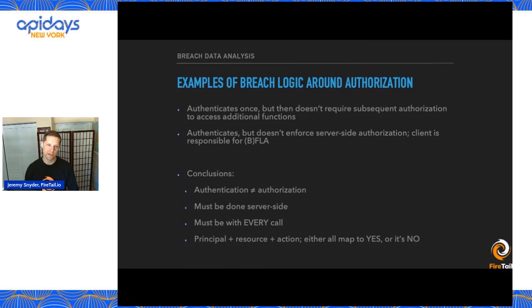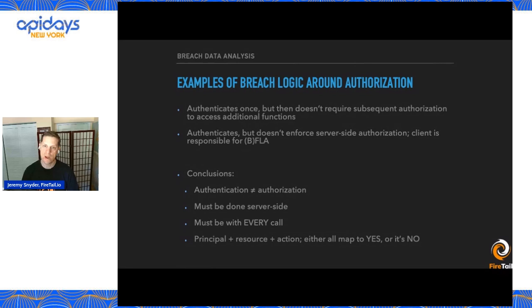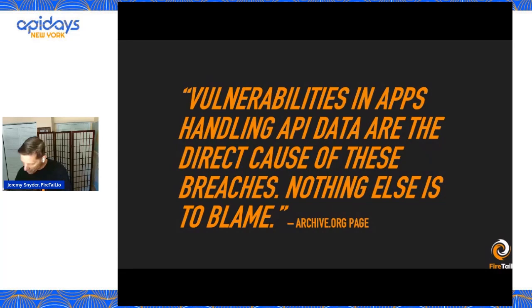When we look at authorization, we talked about object level authorization and function level authorization. The conclusion we came to is that you really need three pieces of information: the principal, plus the resource, plus the action. So it's Jeremy, what he's trying to do, and the data record he's trying to do that with. The best practice around authorization is pretty much a zero trust model — unless you can get to yes, the authorization response is a no.